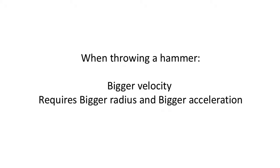If I want to throw a hammer, I want my velocity to be big — throw the hammer as fast as possible. From the expression, v is basically the square root of centripetal acceleration times r: I want a bigger radius and bigger acceleration. If I can accelerate that ball toward the center really fast and make the circle radius bigger, my velocity will be larger. That's why we put it at the end of a chain and launch it.